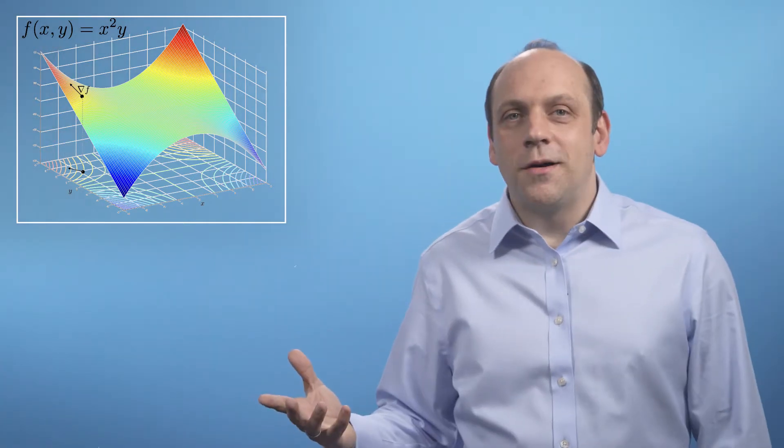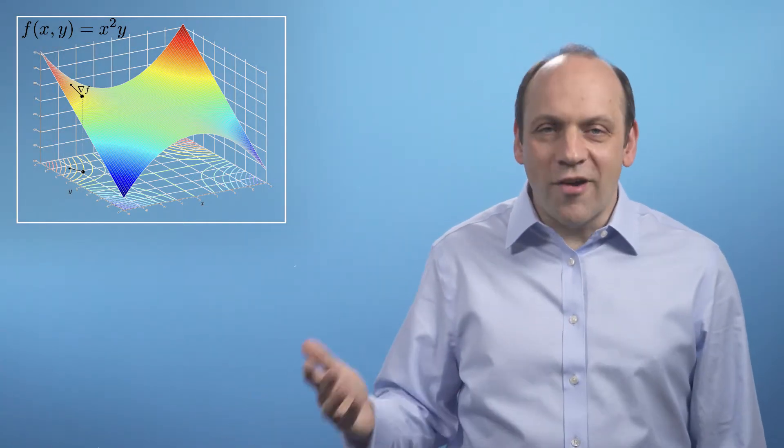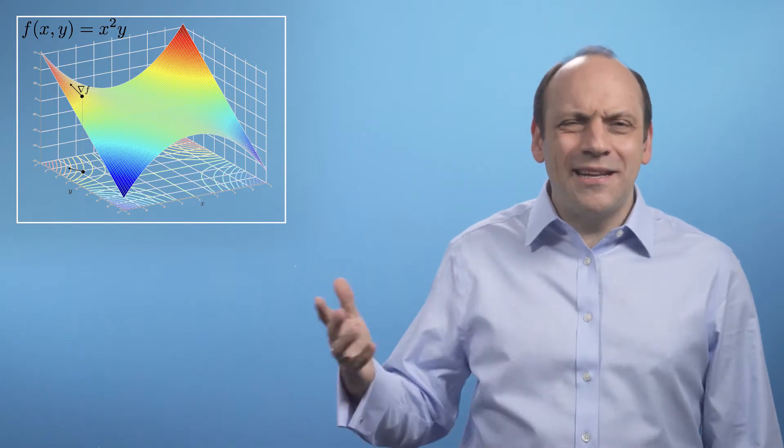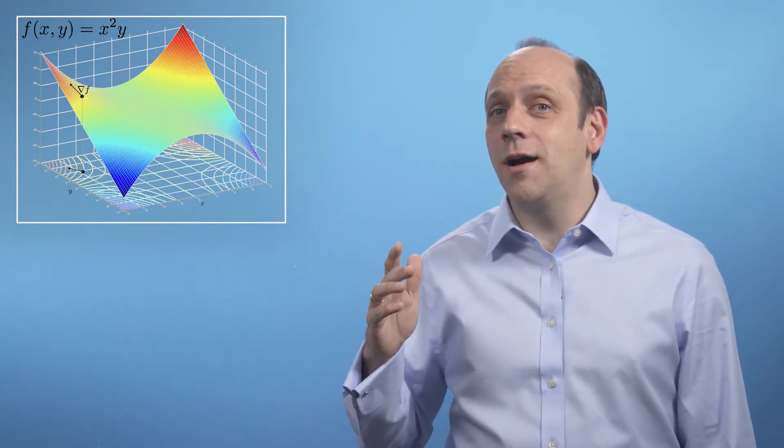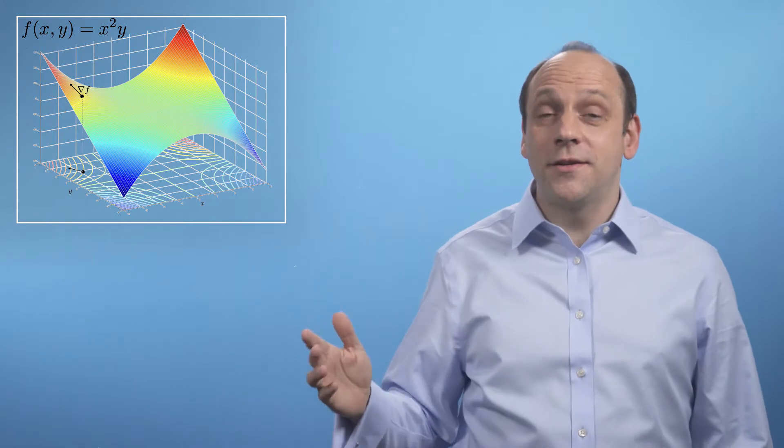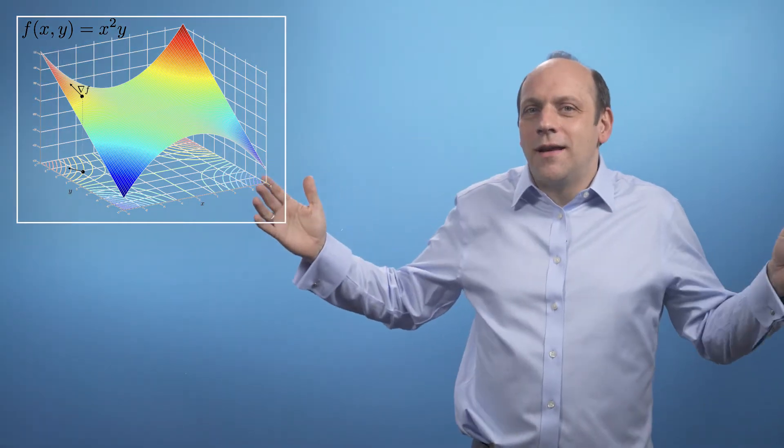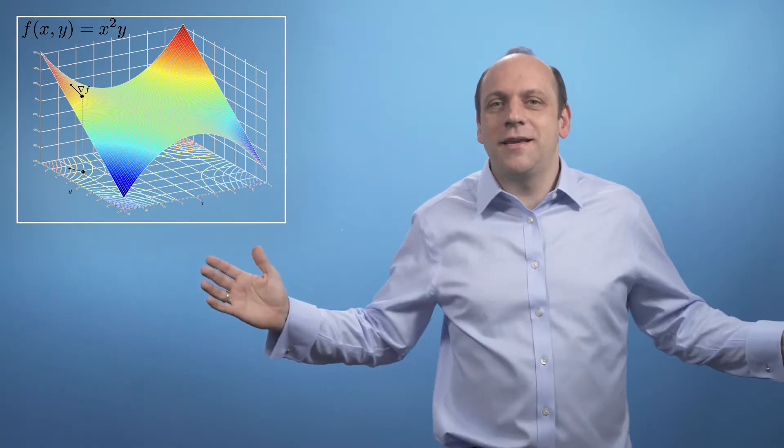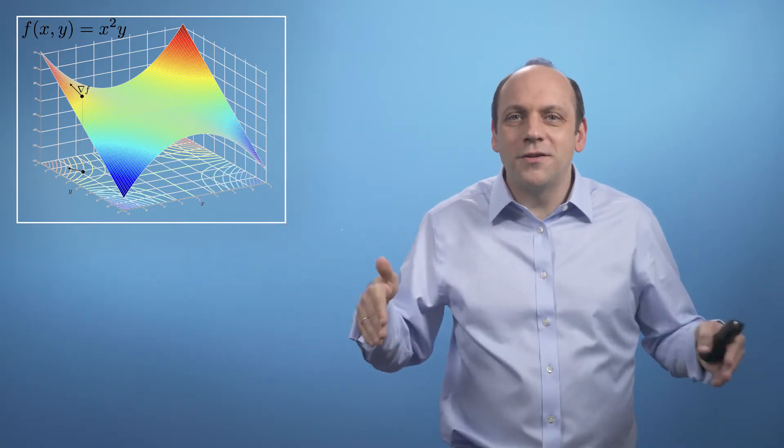The other question to ask is, which way does grad point? This is less easy to see, but grad points up the direction of steepest descent, perpendicular to the contour lines. So think, if you're on a mountain and it's foggy and you can only see locally around you and you want to go down the hill,